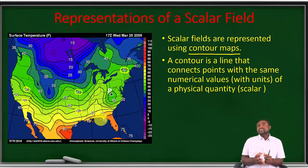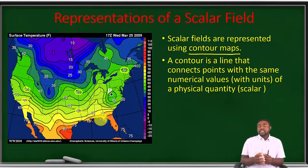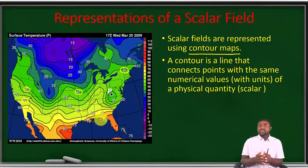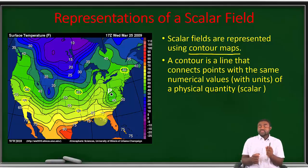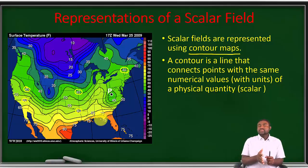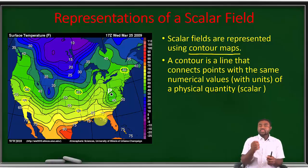It's important you understand that a scalar is a physical quantity that has only a magnitude and a unit associated to it. A scalar field is a mathematical function that assigns a numerical value to a scalar physical quantity at every point in space. Typical examples of scalar fields include temperature, altitude, pressure, and humidity scalar fields — all functions that give a particular numerical value for a given physical quantity at every point in space. Scalar fields are represented using contour lines connecting different points with the same numerical value.